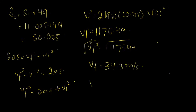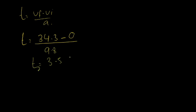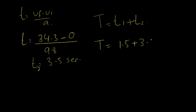Now we calculate T2 using VF equals VI plus AT, so T equals VF minus VI upon A. VF is 34.3, VI is 0, and acceleration is 9.8 meters per second squared, giving T2 equal to 3.5 seconds. Total time equals T1 plus T2, which is 1.5 plus 3.5, equal to 5 seconds.